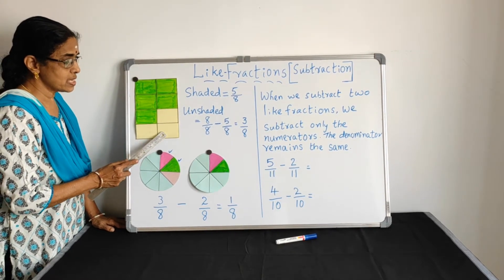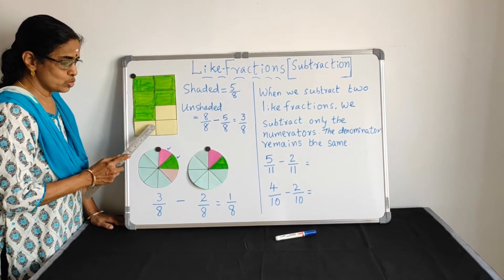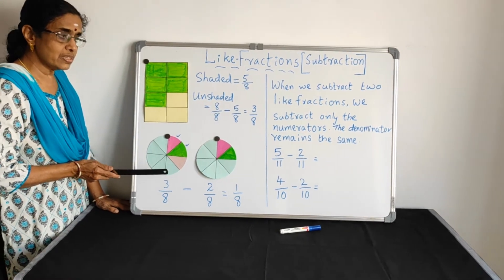1, 2, 3. 1 by 8. Together, 2 by 8. Together, 1, 2, 3. It represents 3 by 8. Unshaded portion, 3 by 8.